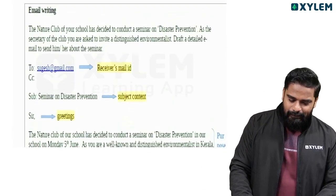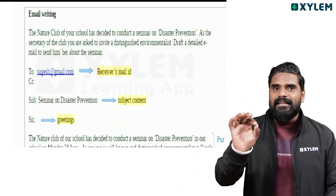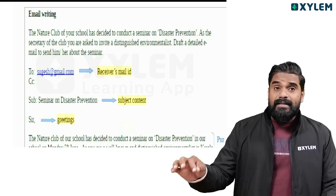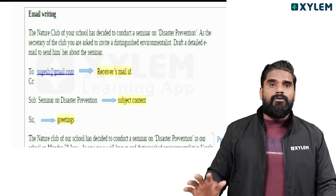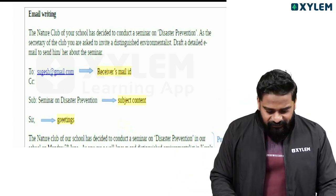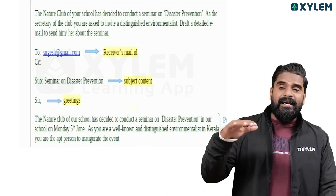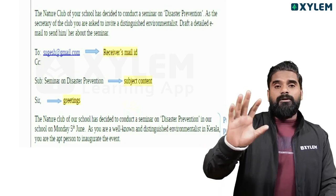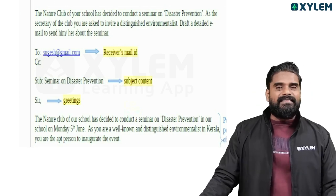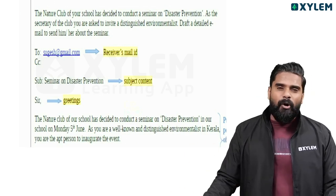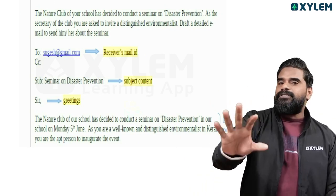Example question: The Nature Club of your school has decided to conduct a seminar on disaster prevention. As the secretary of the club, you are asked to invite a distinguished environmentalist. Draft a detailed email to send to him or her about the seminar. The sender's address goes in the 'From' field, recipient's address in the 'To' field. We also have CC — carbon copy — and BCC. The subject: 'Seminar on Disaster Prevention'.